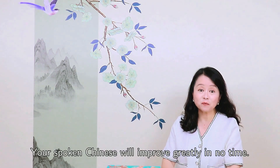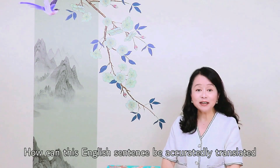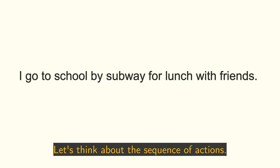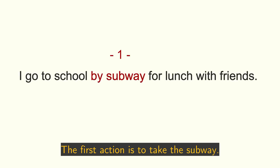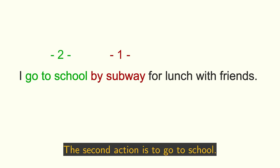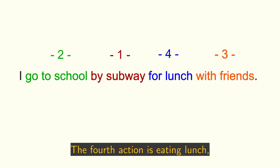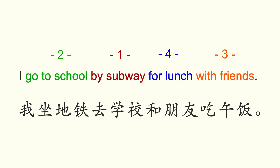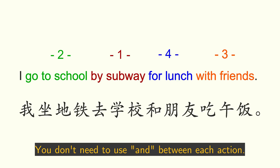Your spoken Chinese will improve greatly in no time. Let's take another example. How can this English sentence be accurately translated into Chinese? Let's think about the sequence of actions. The first action is to take the subway. The second action is to go to school. The third act is staying with friends. The fourth action is eating lunch. So the Chinese translation follows that order — you don't need to use 'and' between each action.